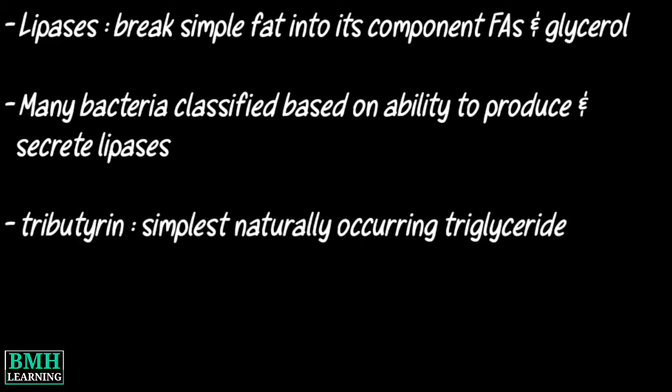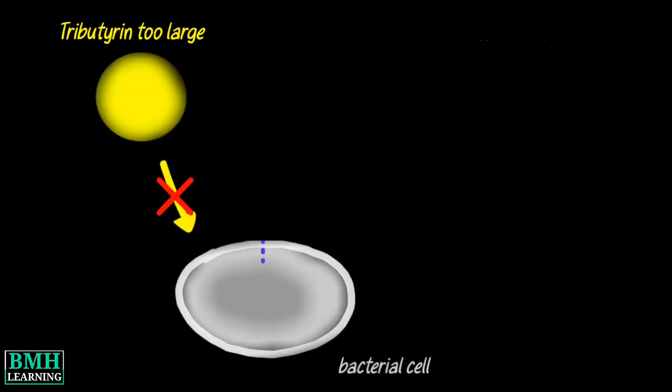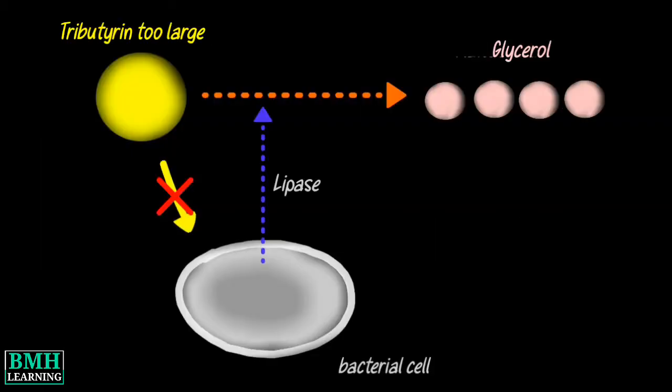Tributyrin is the simplest naturally occurring triglyceride and can be used for this determination. Tributyrin is too large to enter the cell, so lipase is released to break it down prior to cellular uptake.